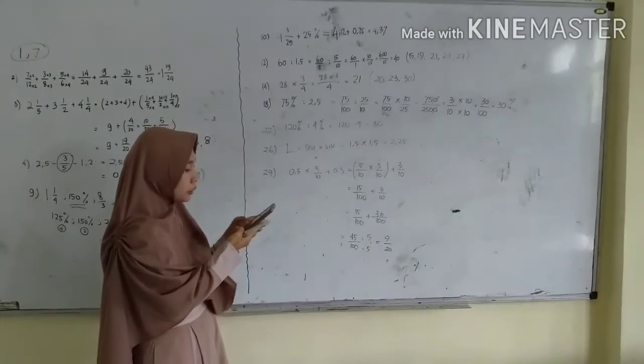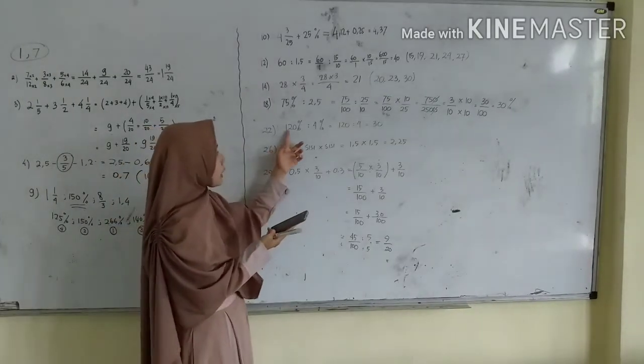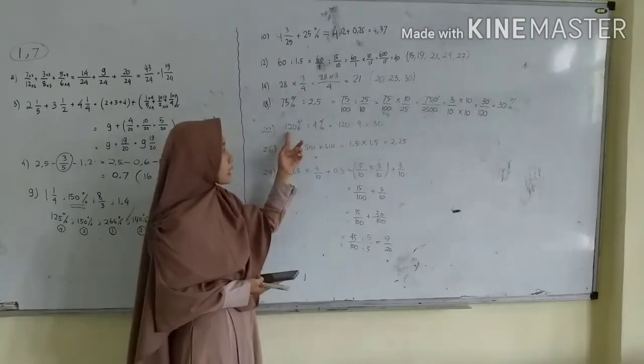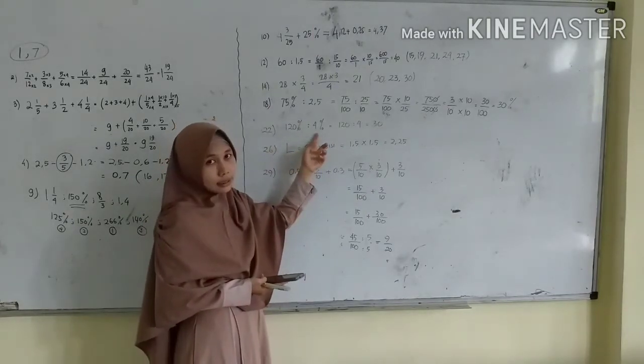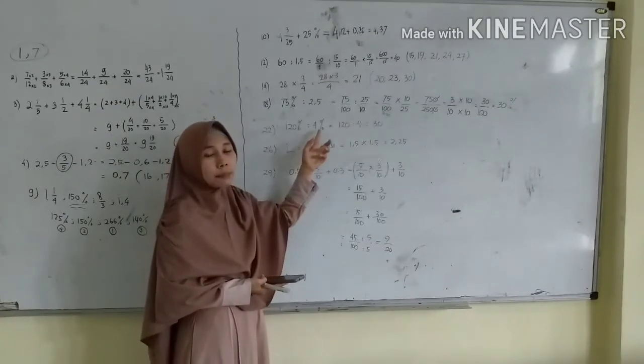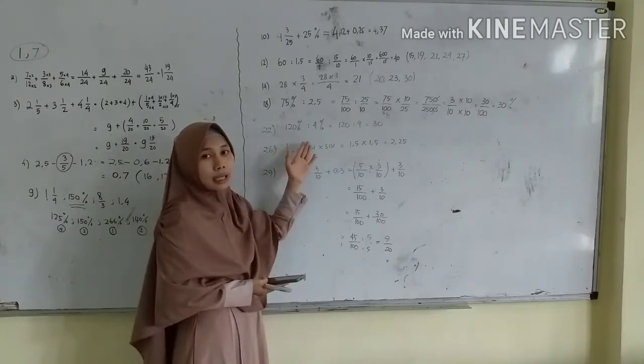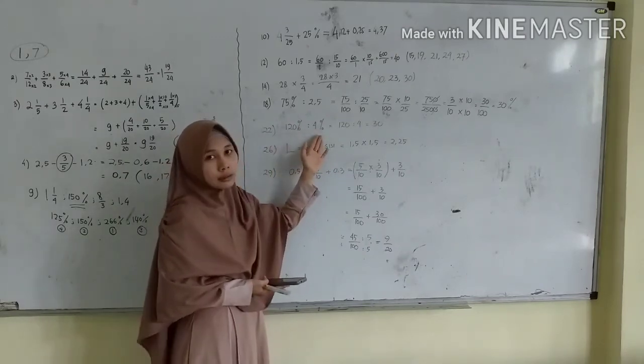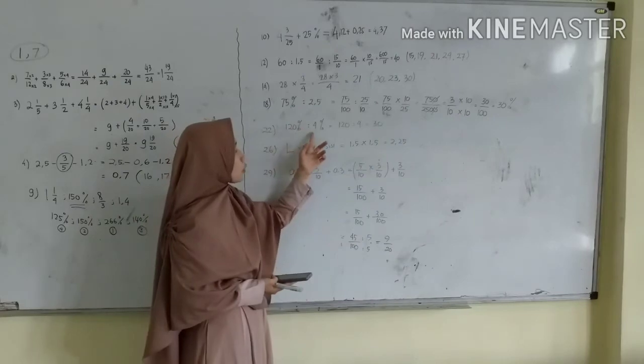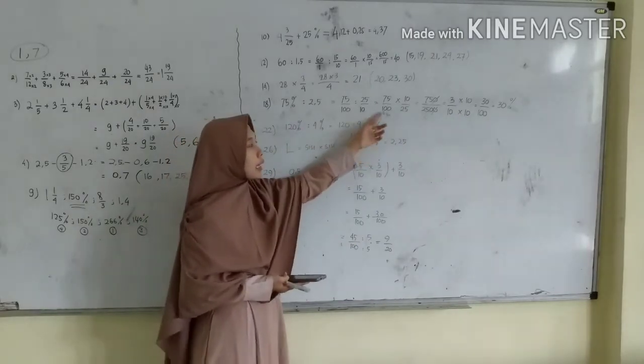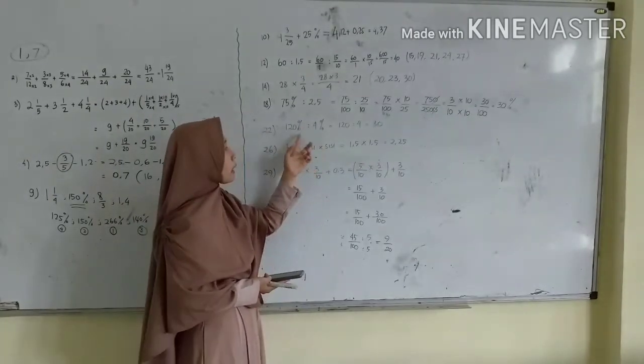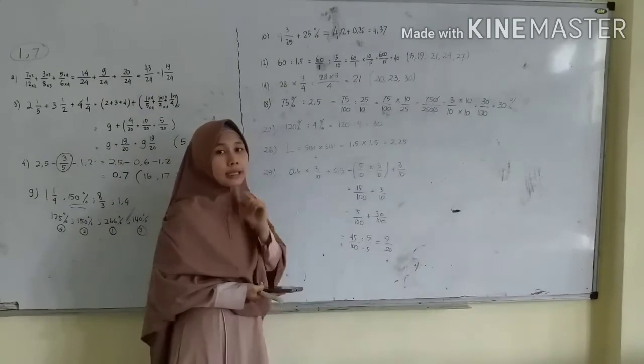Nomor 22. Nomor 22 itu hasil pembagian, pembagian lagi. Tetapi disini persen dibagi dengan persen ya. Kalau persen dibagi dengan persen maka caranya adalah persen yang hilang ya. 120 dibagi 4 hasil 30. Ingat kalau pembagian persen, persennya hilang ya.